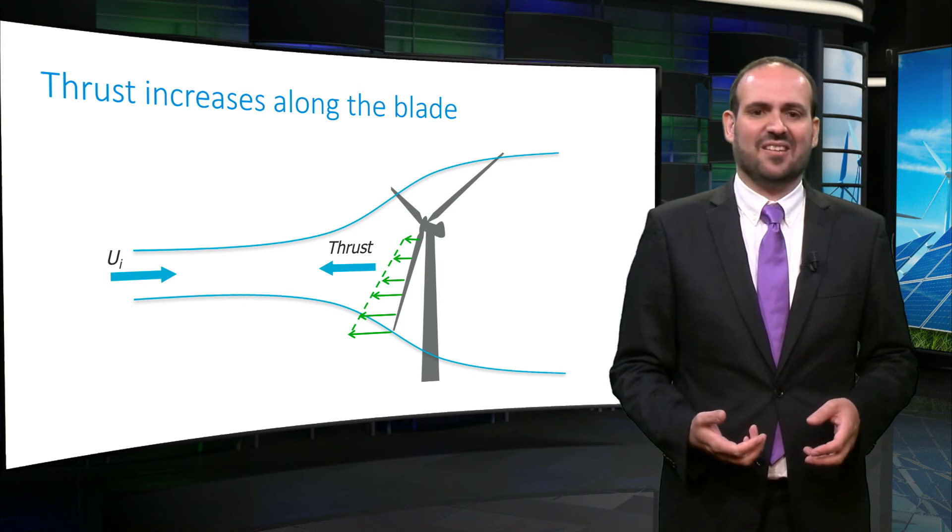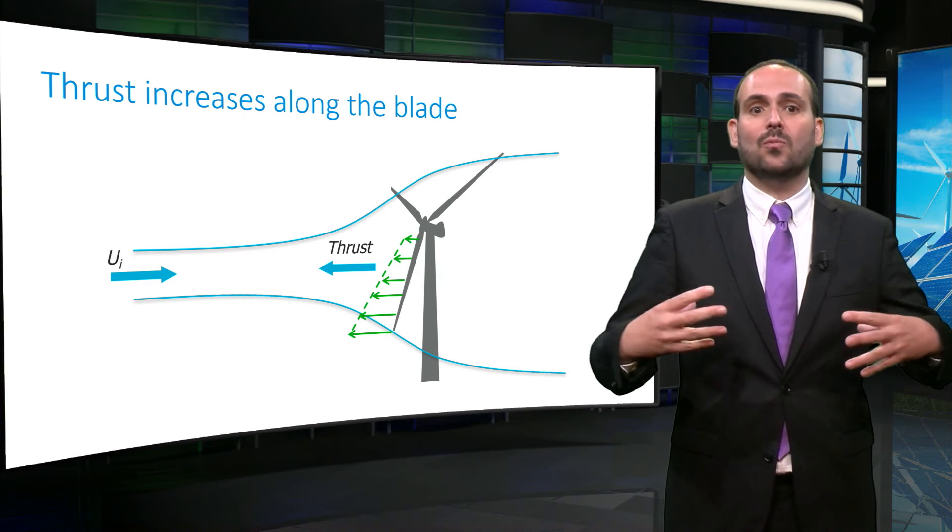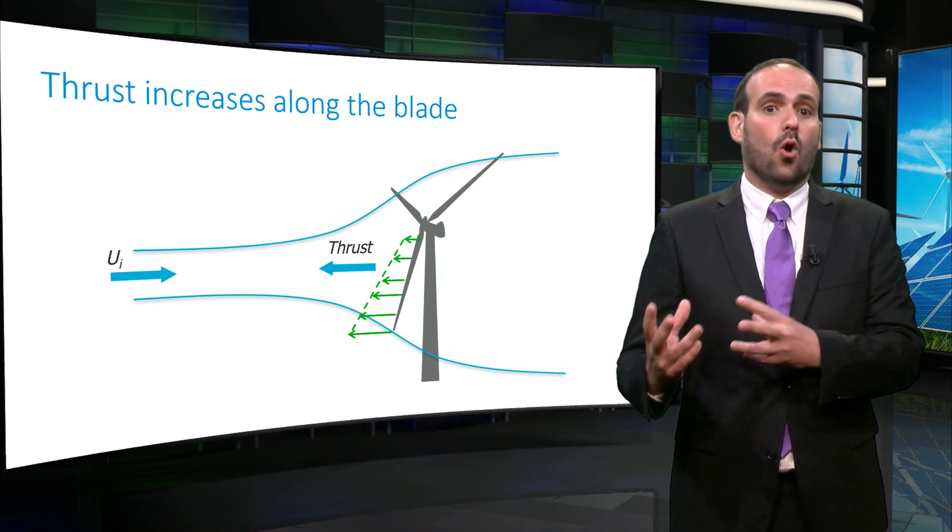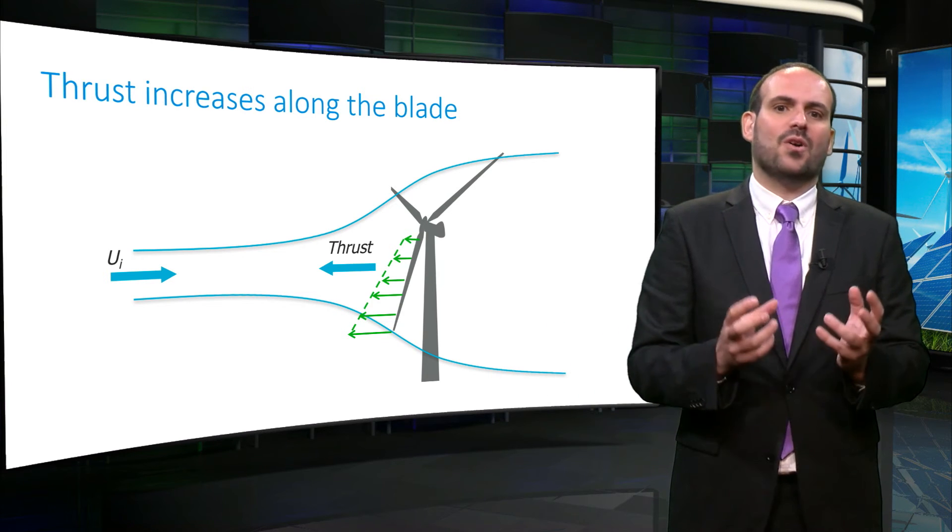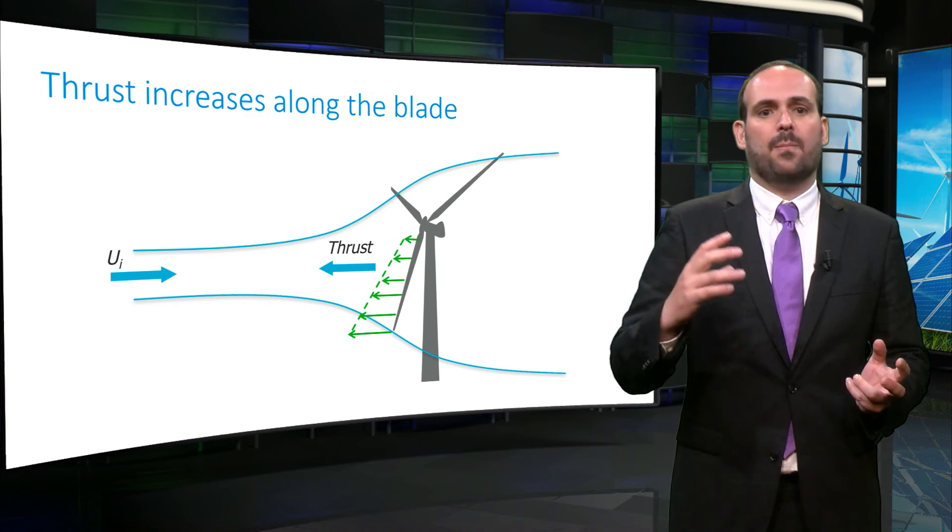As kinetic energy is extracted from the tube, the wind speed decreases and the stream tube expands. Because we just have two or three blades, we try to approximate this, and an average deceleration and forces of the blades apply on the wind.